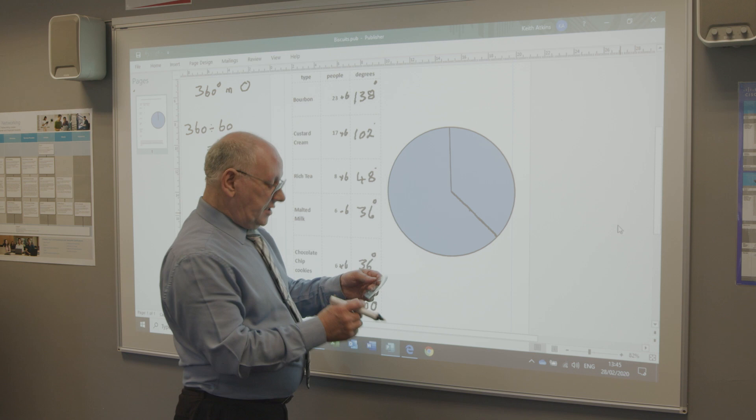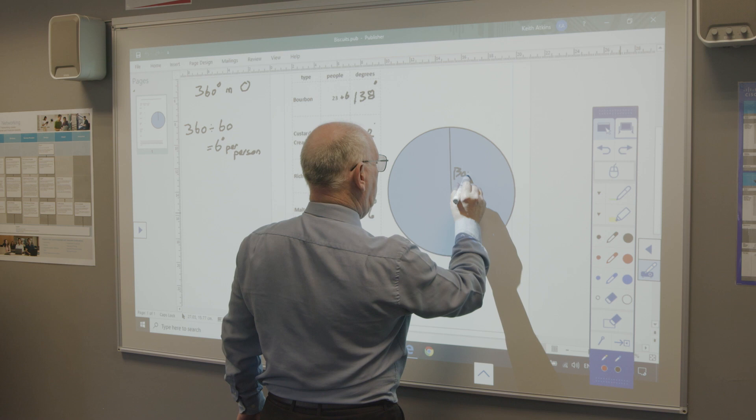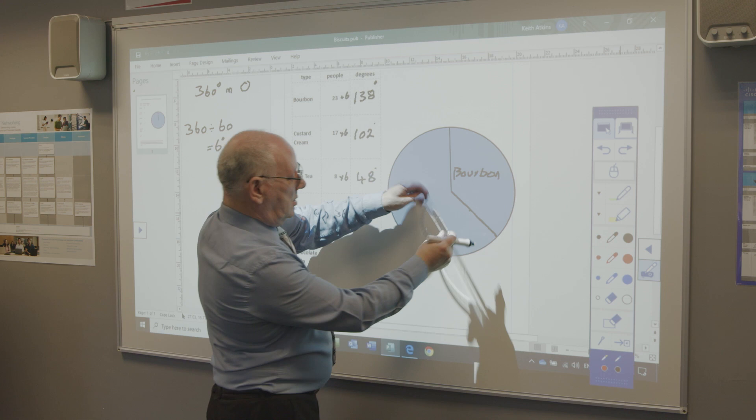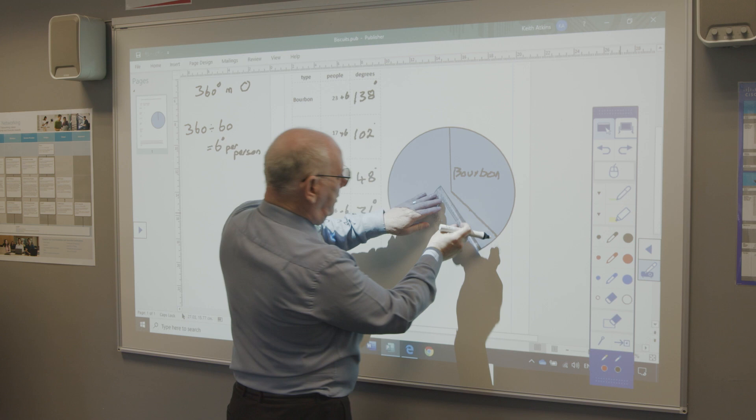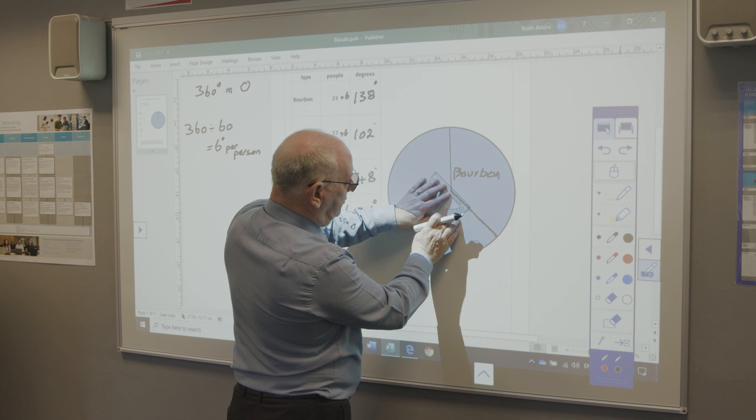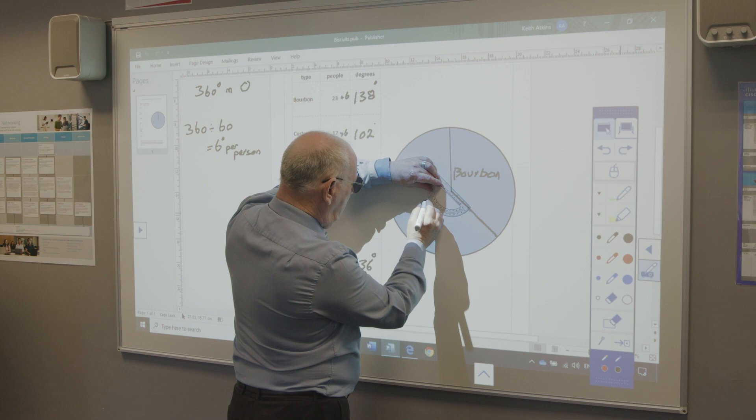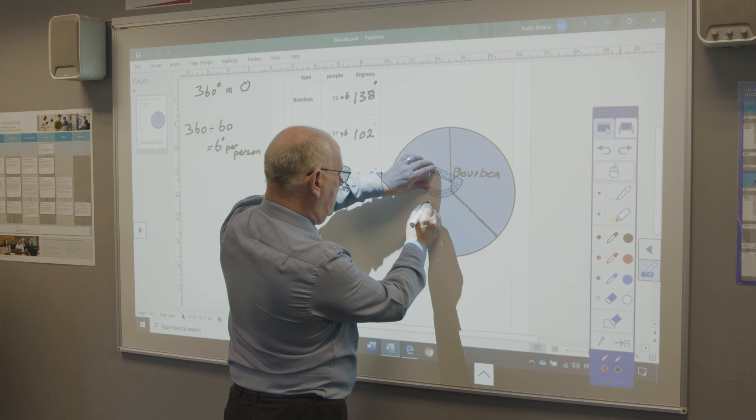So we've got the 138. And we know that's bourbon. So we can put that in. Then we do exactly the same again on this straight line. Notice how I'm holding the protractor. You can turn the paper around if you prefer. I can't turn the board around, unfortunately. So I'm going to do it upside down. So now we're looking at 102. Which is about there.